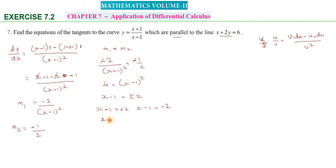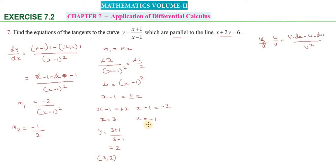When x equals 3: y equals (3+1)/(3-1) equals 4/2 equals 2. So one point is (3, 2). When x equals minus 1: y equals (minus 1 plus 1)/(minus 1 minus 1) equals 0 divided by minus 2 equals 0. So the second point is (minus 1, 0).